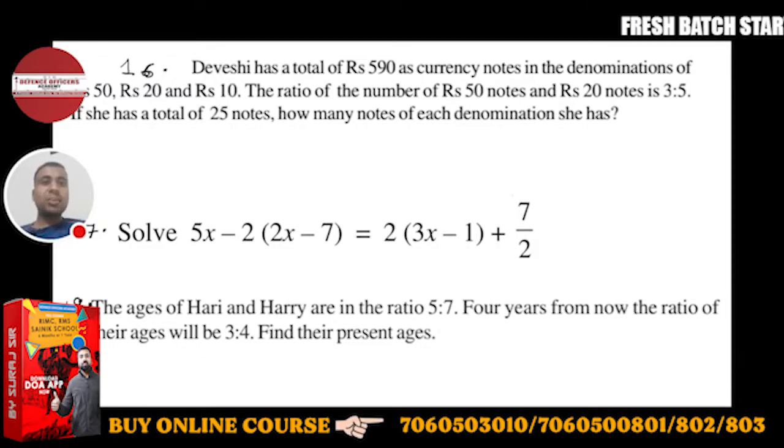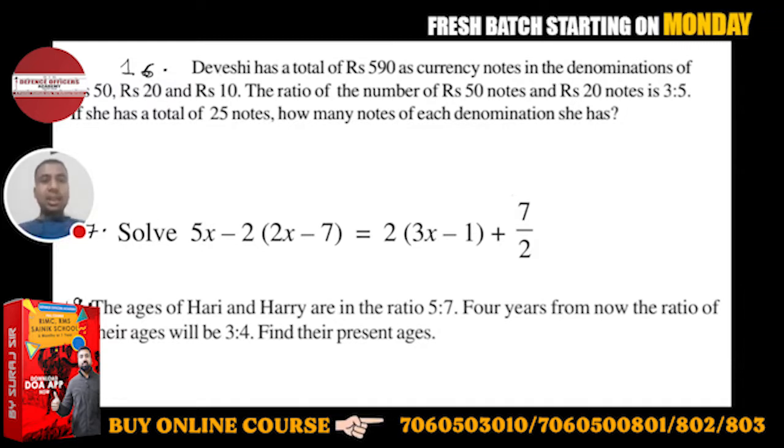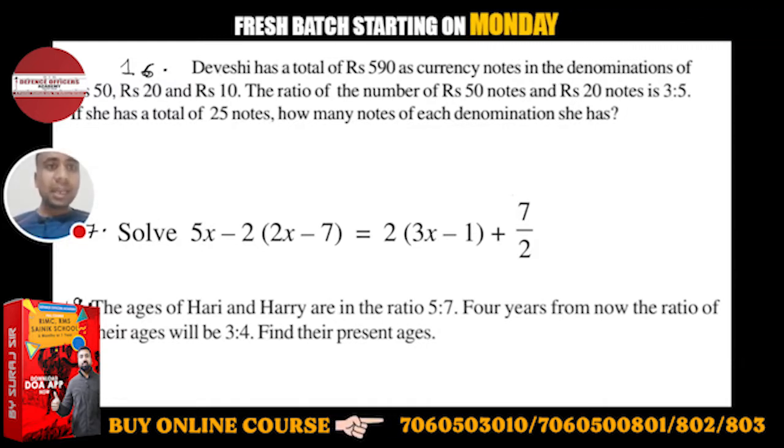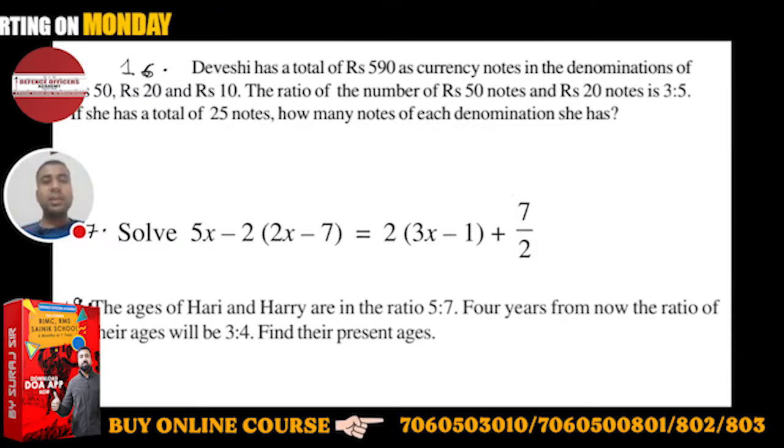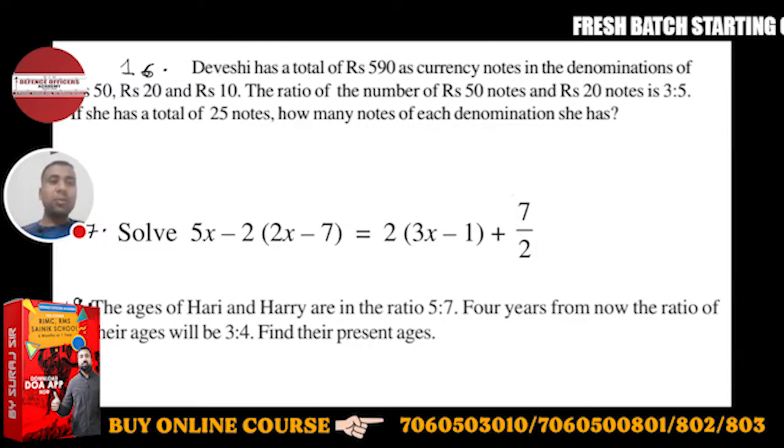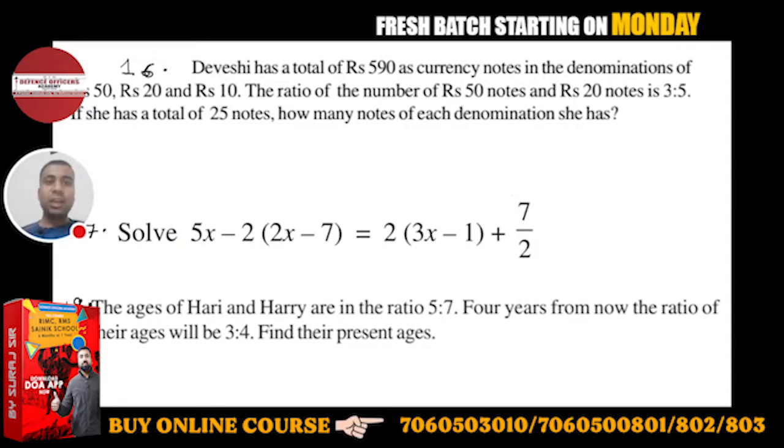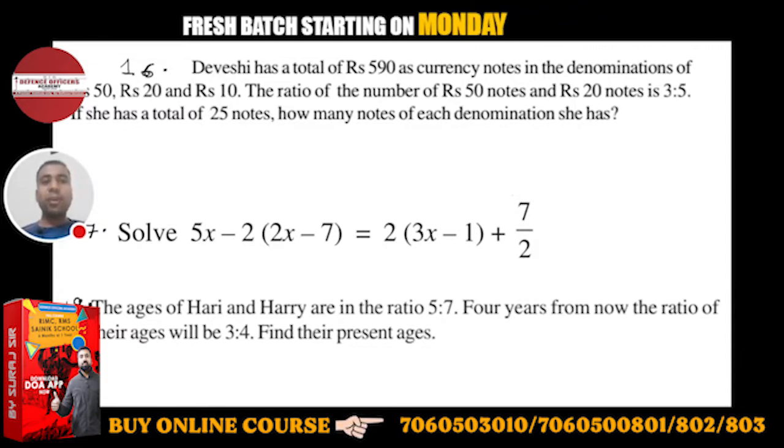Question number 16. Deveshi has a total of rupees 590 as currency notes in the denomination of 50 rupees, 20 rupees, and 10 rupees. The ratio of the number of 50 rupees notes and 20 rupees notes are given in the ratio 3 to 5, and she has a total of 25 notes. So how many notes of each denomination?